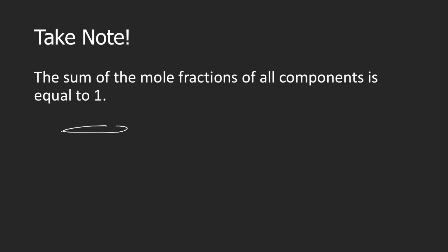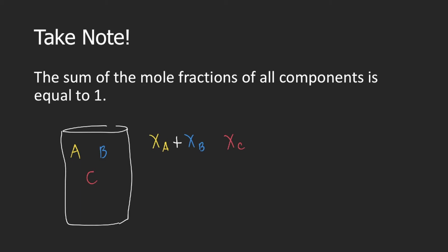Going back to our example, the container has substances a, b, and c. So we can solve for three mole fractions. The statement says that if you add the mole fractions of all components, this would be equal to 1. So chi a plus chi b plus chi c is equal to 1. If we had another component d, then chi a plus chi b plus chi c plus chi d is still equal to 1. Again, the sum of the mole fractions of all components is equal to 1.